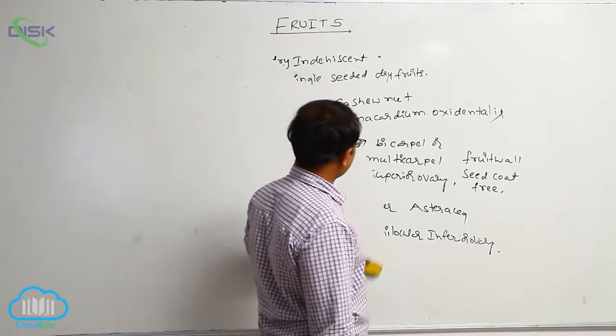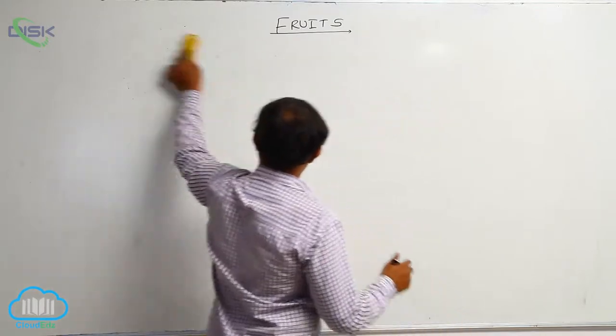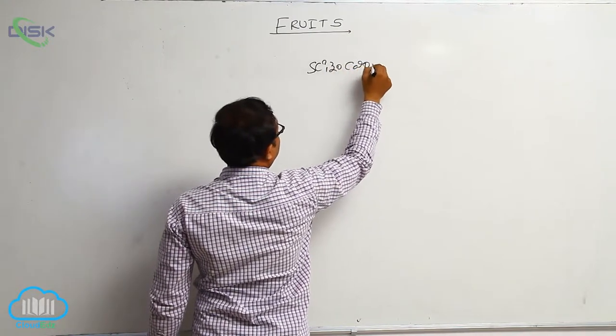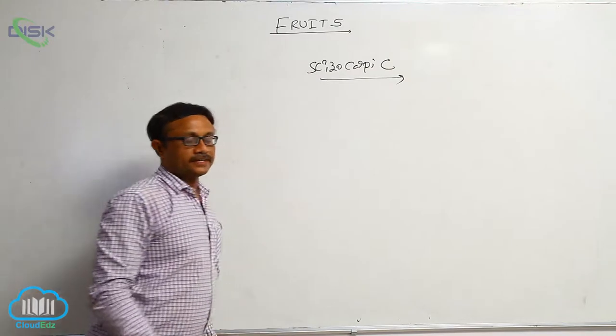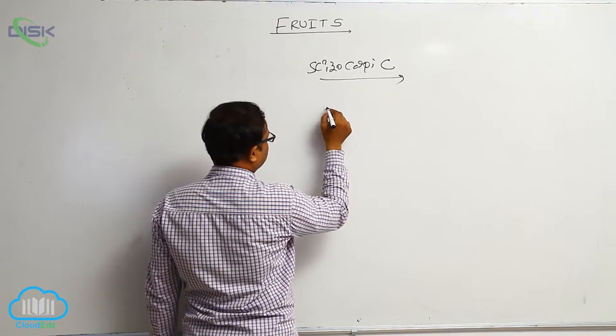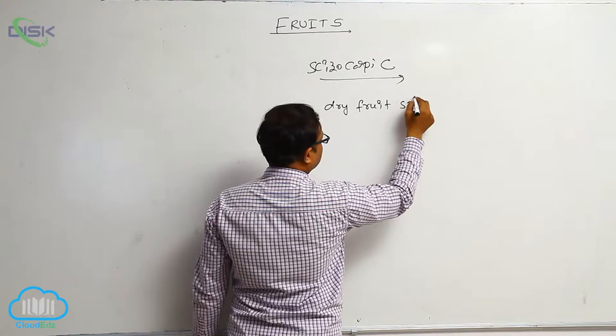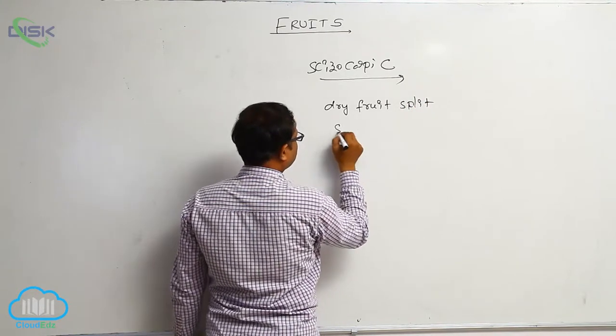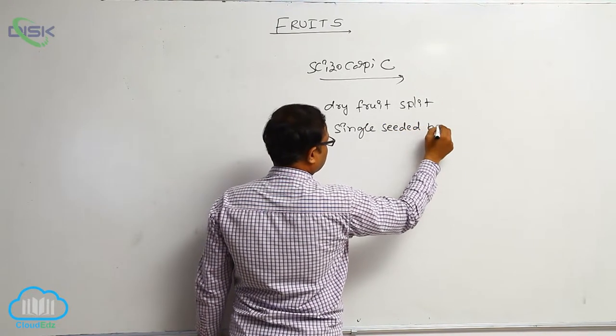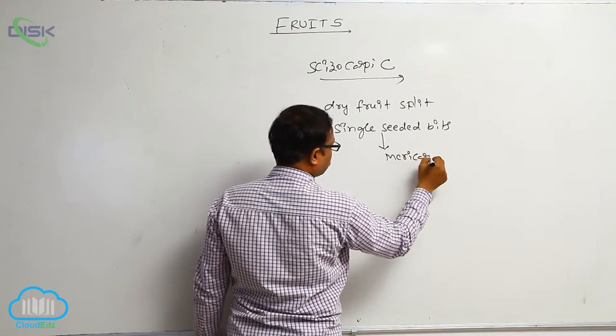After then, schizocarpic fruit. In schizocarpic fruit, at the time of mature condition, dry fruits split into single seeded bits. This single seeded bits are known as the mericarp.